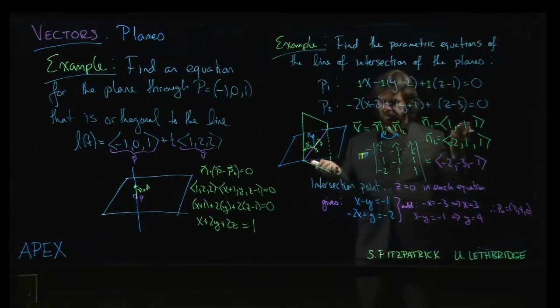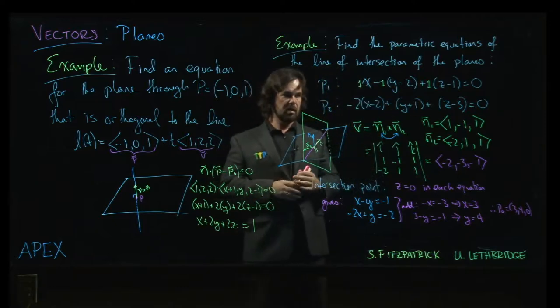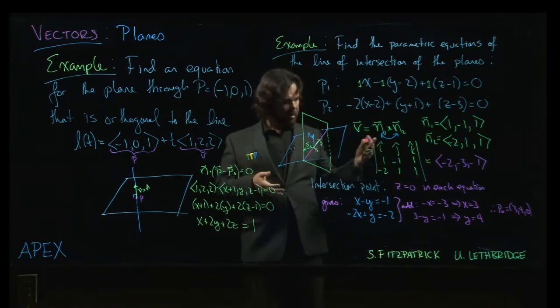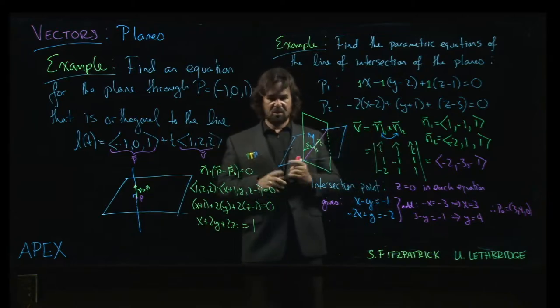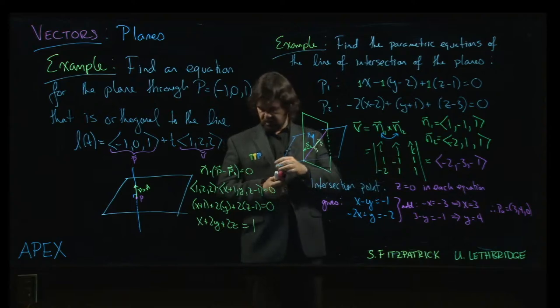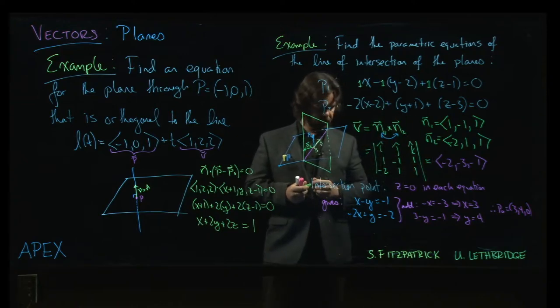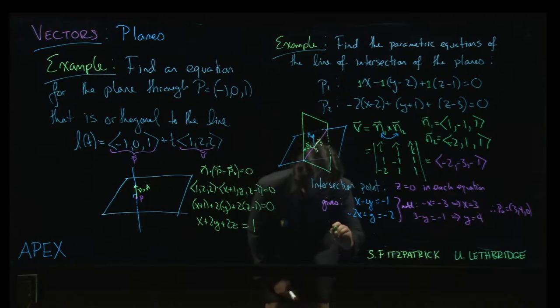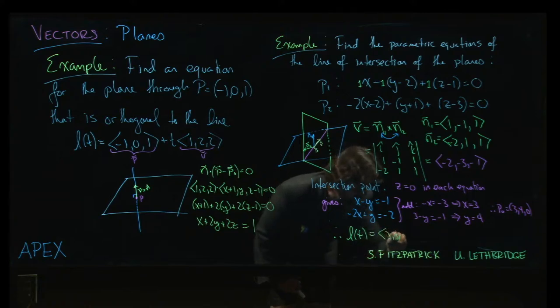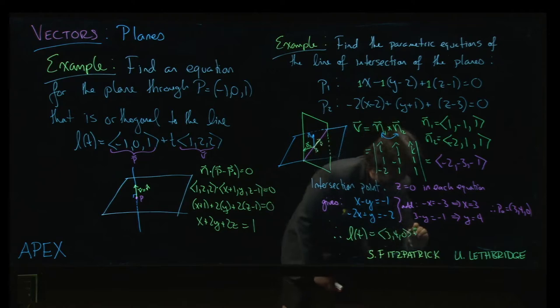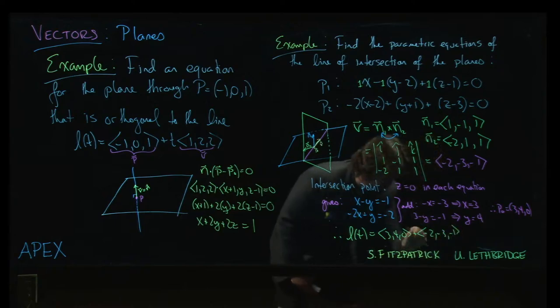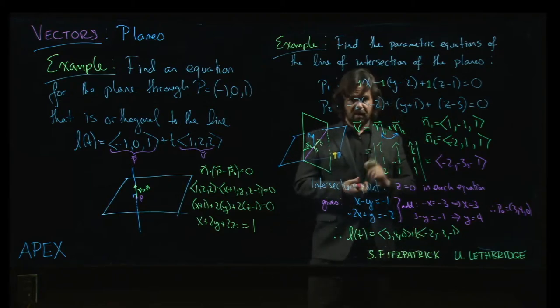That gives me a point on the line. And you could have chosen other values for Z, or you could have set one of the other variables equal to 0, or you could solve each equation for Z like the textbook does. So there are many ways to get a point. There's no unique answer here. We just need to find one. And so now that we have a point in the direction, we can write down the equation of the line as our final answer. So our line is L of T equals 3, 4, 0 plus minus 2, minus 3, minus 1 times T. That gives me the equation of the line.